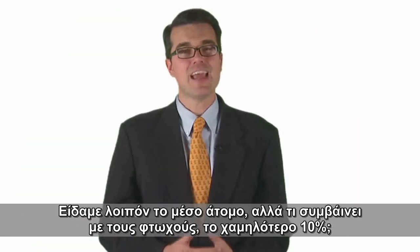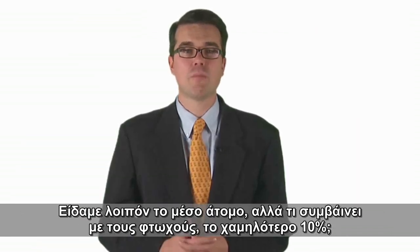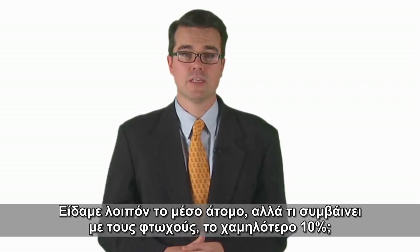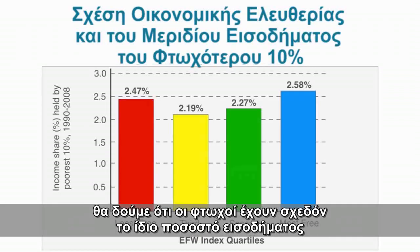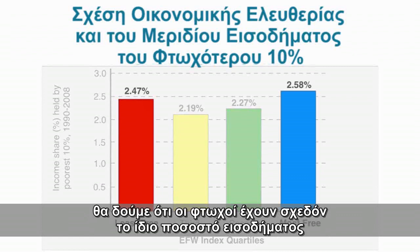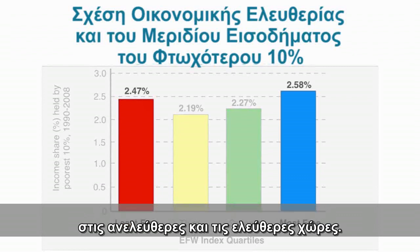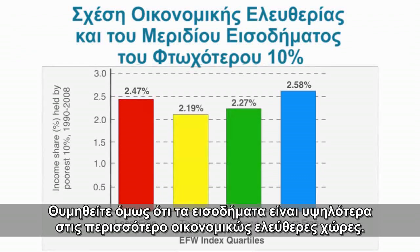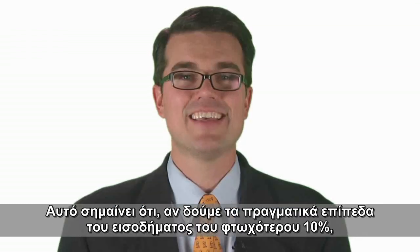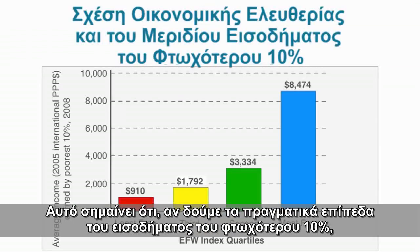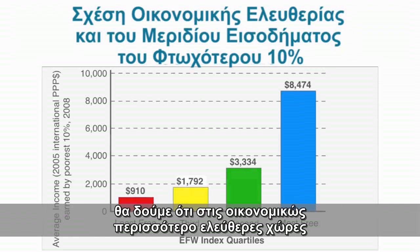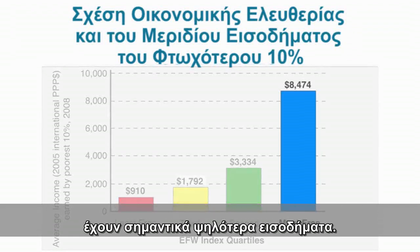So that was the average person. But what about the poor — the bottom 10%? If we look at this relationship, we see that the poor get roughly the same share of income in unfree countries as in free countries. But remember, incomes are higher in more economically free countries. This means that if we look at the actual income level of the poorest 10%, they have substantially higher incomes in more economically free countries.